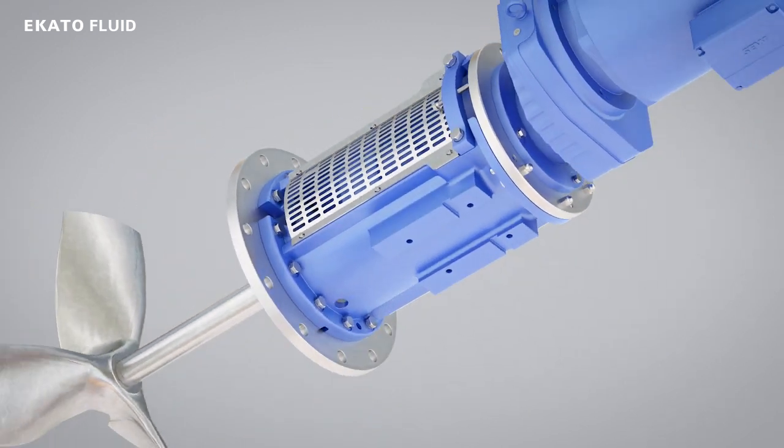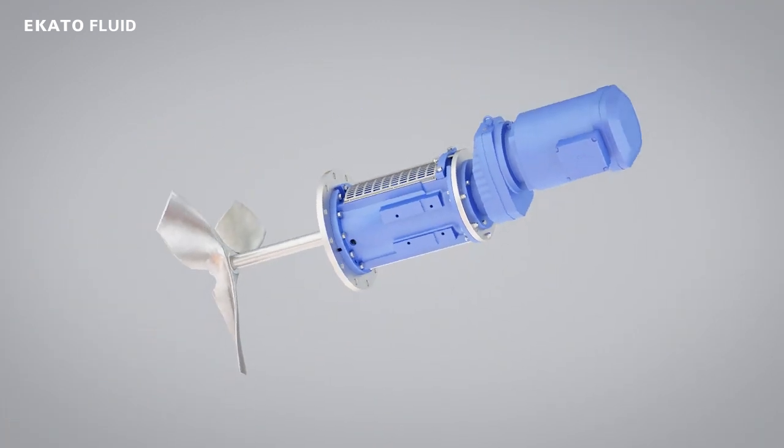The Ekato Fluid ES2000V for fast and easy maintenance. No dismounting of the motor gearbox. No hoisting devices for mechanical seal maintenance required.